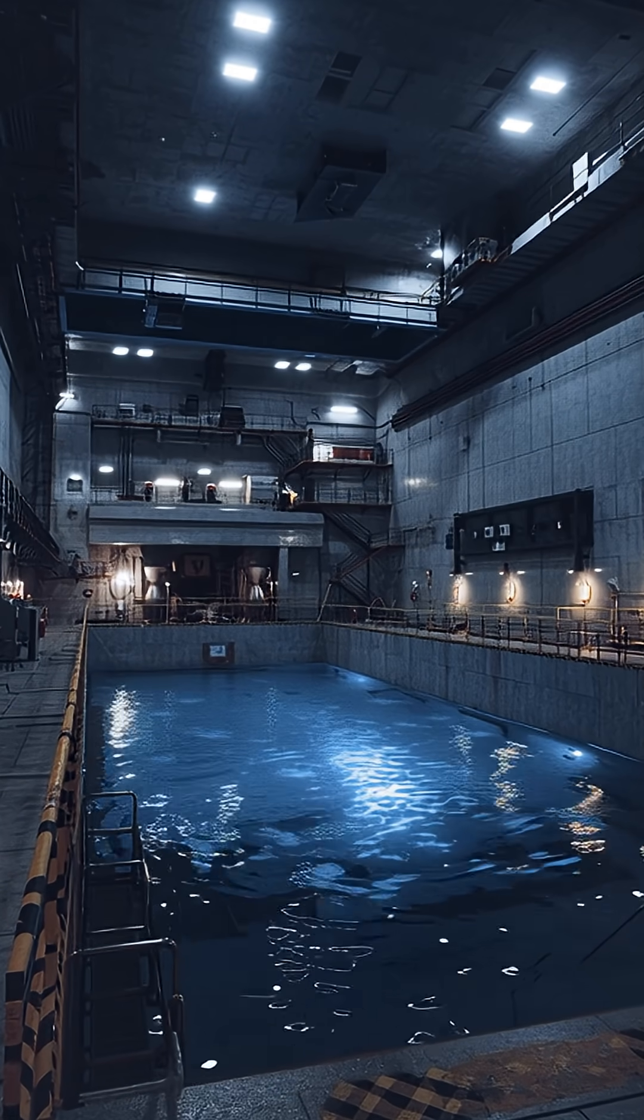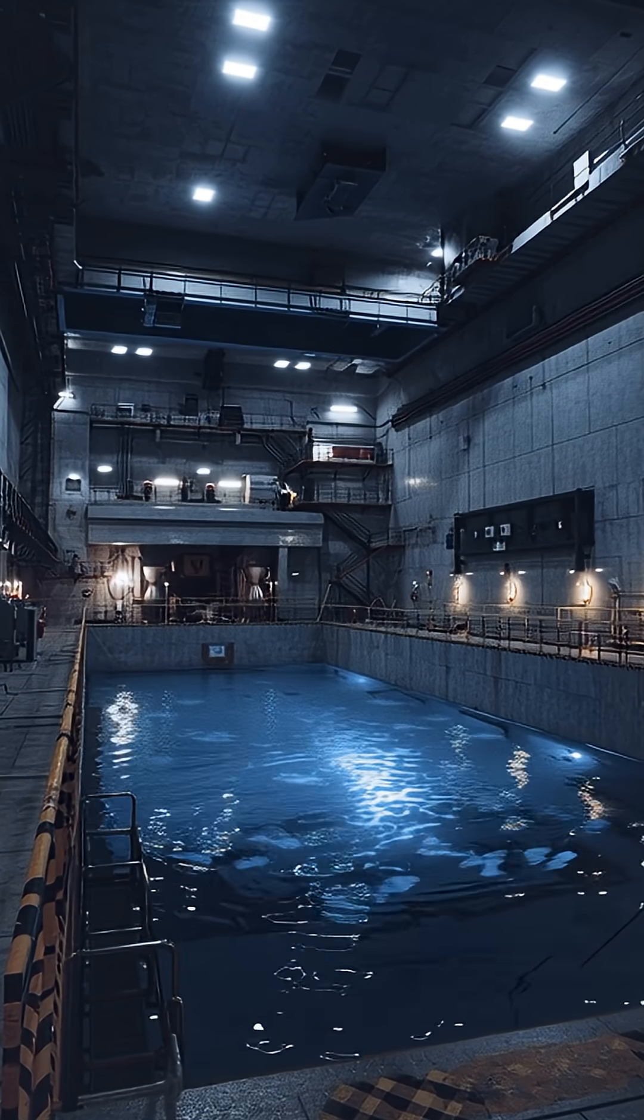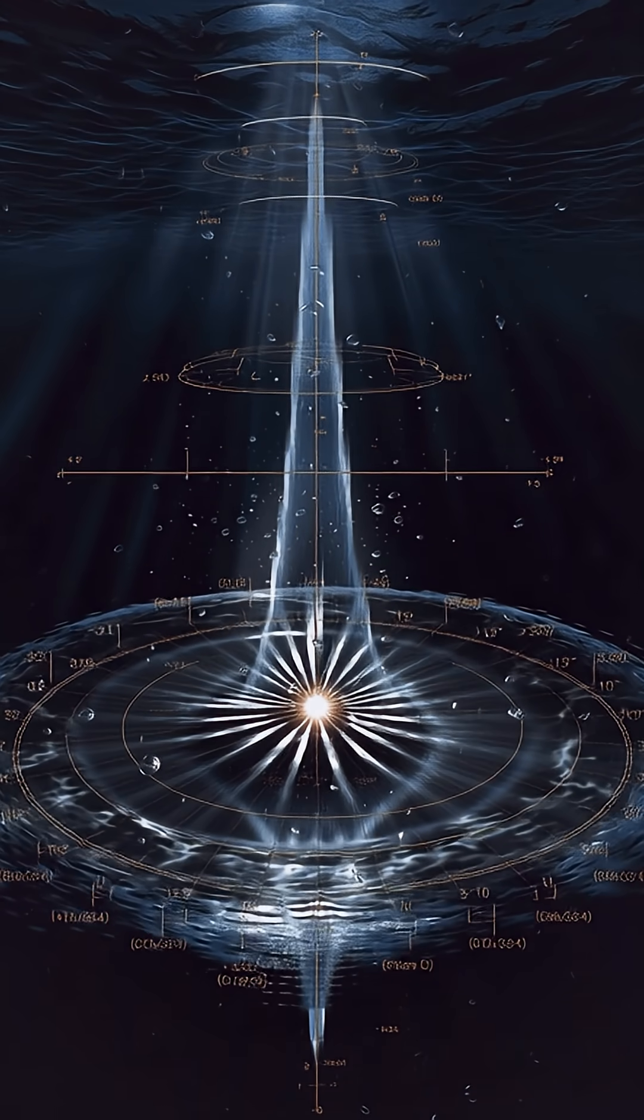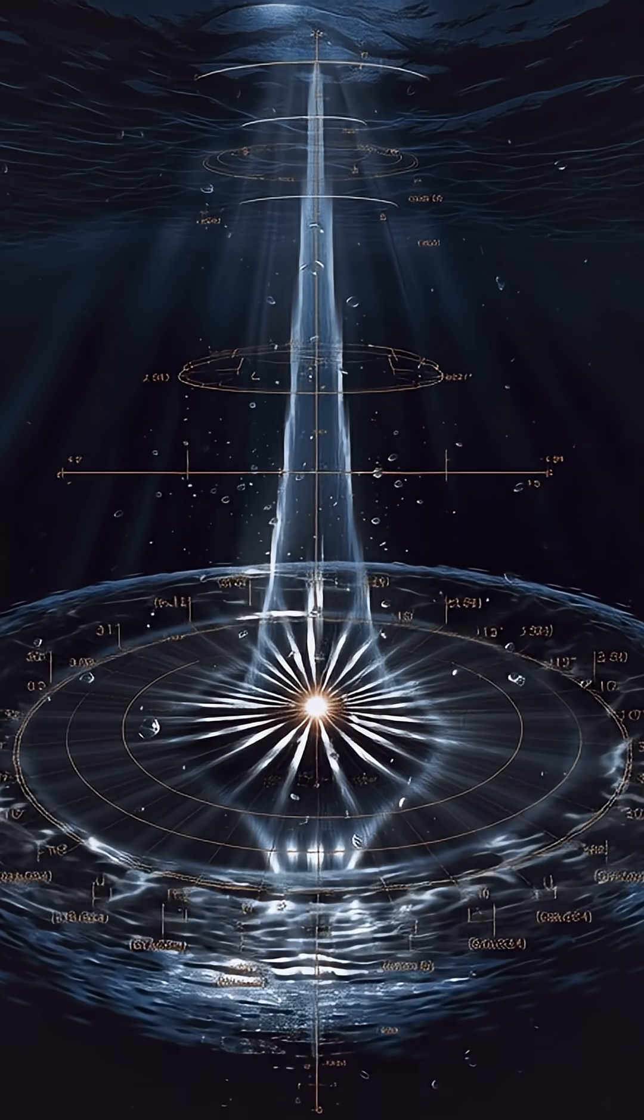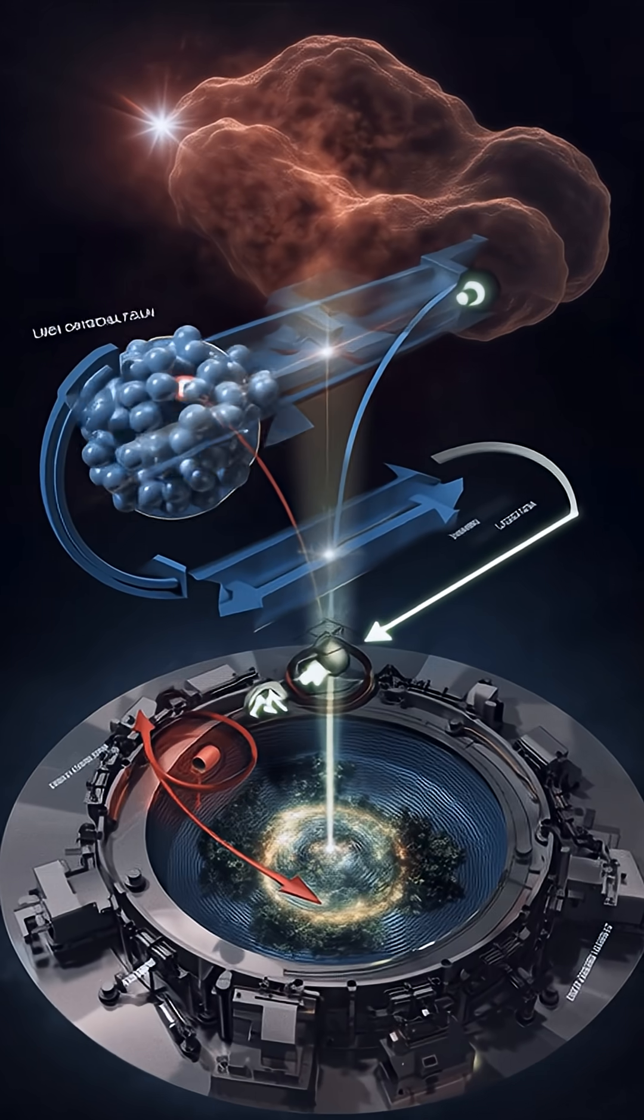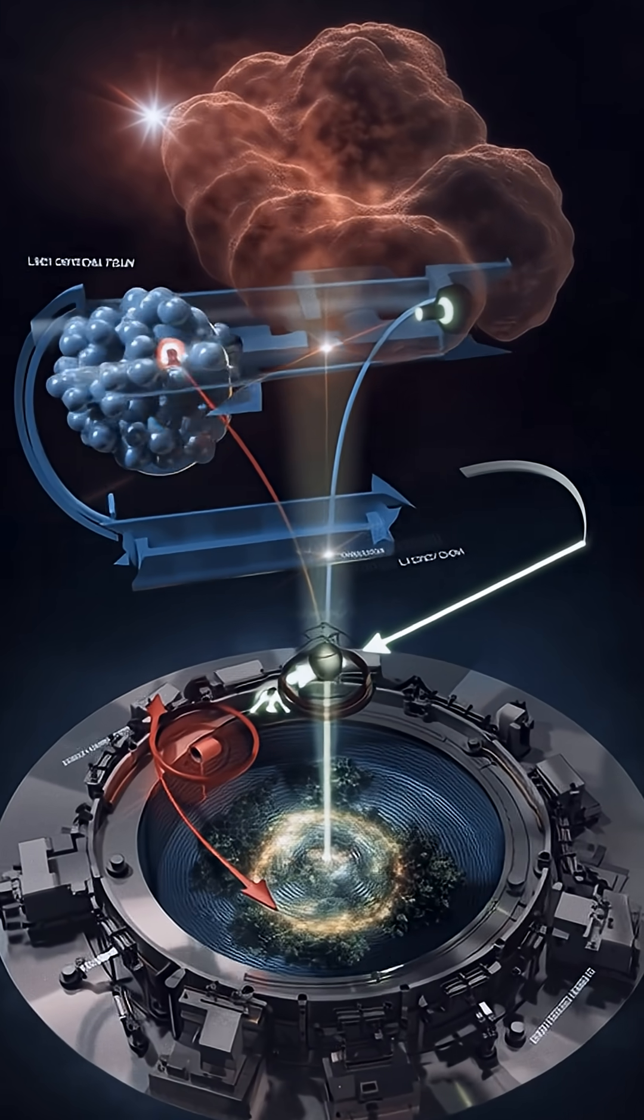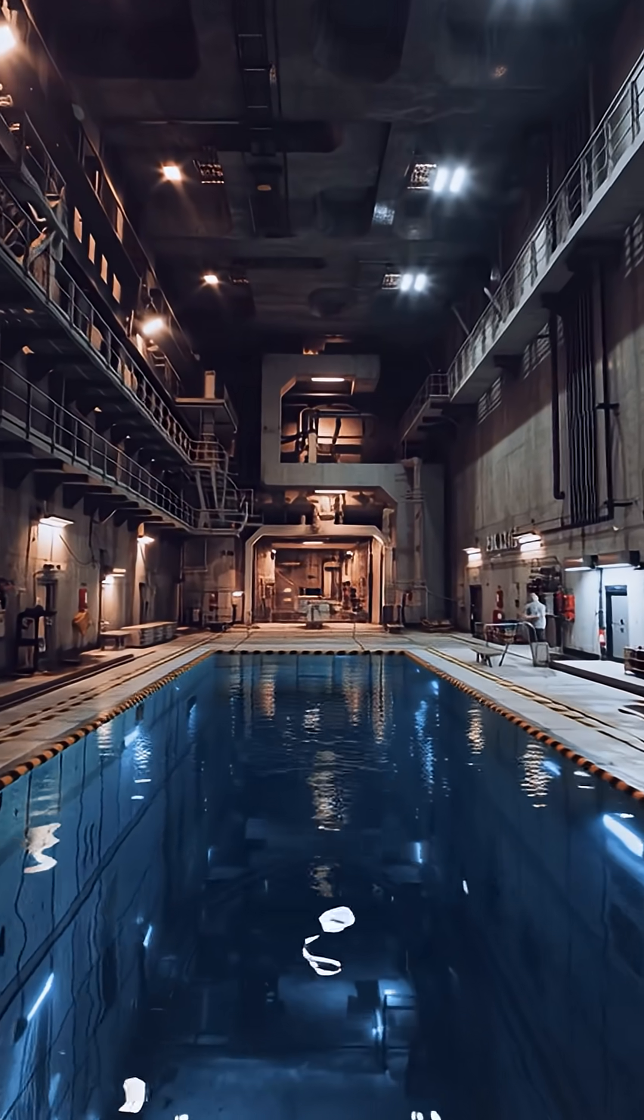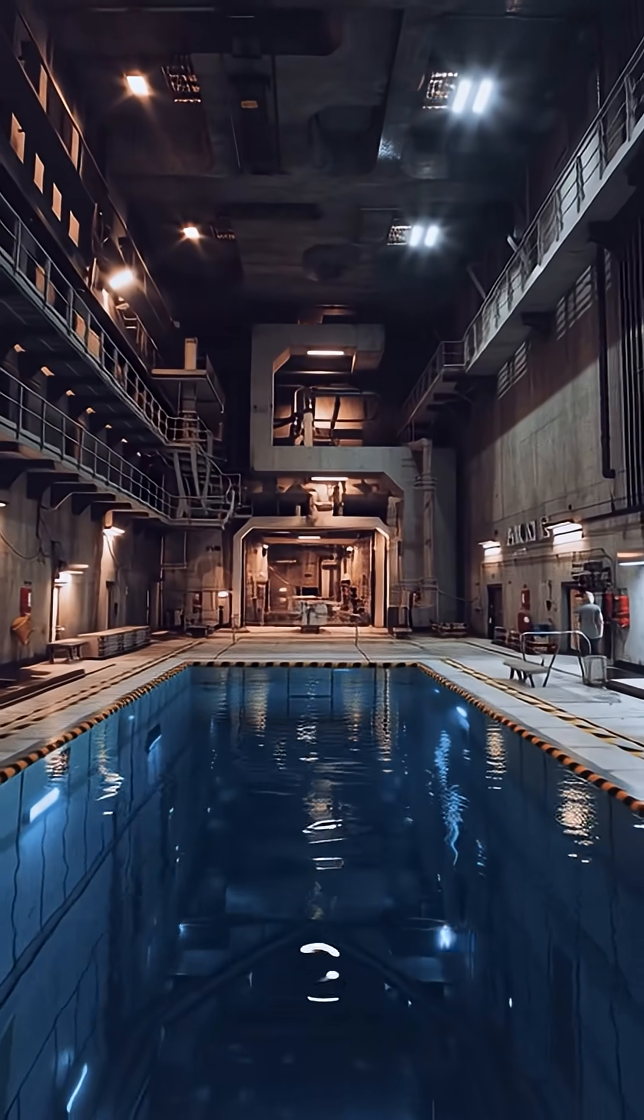In water, where its speed is C over N with N approximately 1.3, fast electrons or other charged particles can move faster than light in that medium, though never faster than C, producing a blue optical sonic boom known as Cherenkov radiation, famously seen glowing around nuclear reactors.